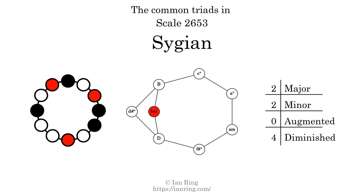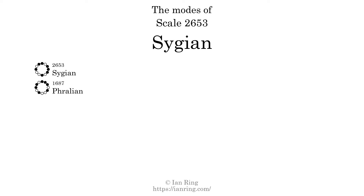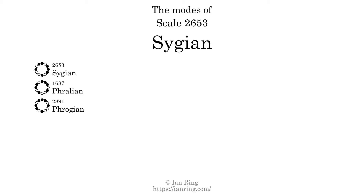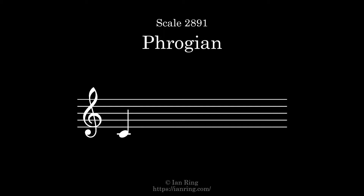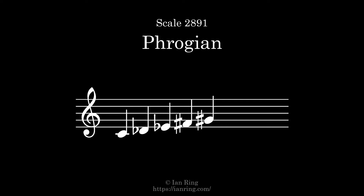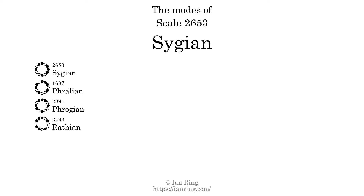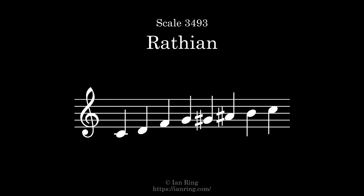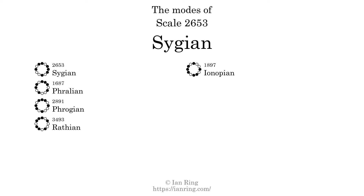This scale has seven modes. The first mode is itself. The second mode is scale 1687, also known as Fralien. The third mode is scale 2891, also known as Fralien. The fourth mode is scale 3493, also known as Wrathion. The fifth mode is scale 7493, also known as Eologian. The sixth mode is scale 7493, also known as Eologian.